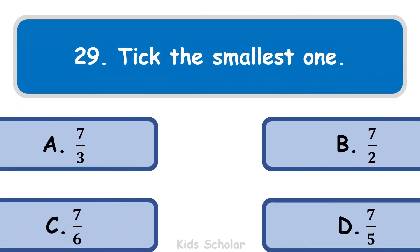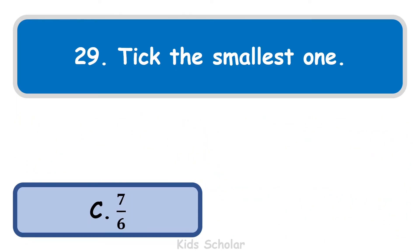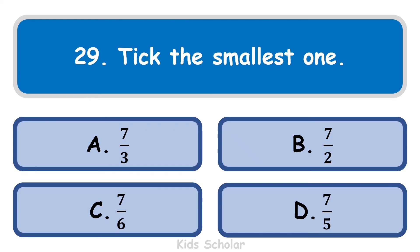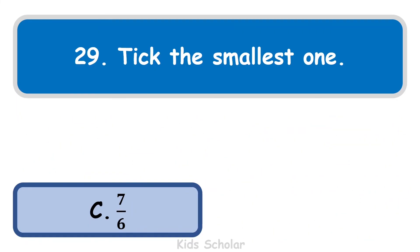Next question is: tick the smallest fraction. The options are 7 by 3, 7 by 2, 7 by 5, and 7 by 6. All fractions have the same numerator, so the fraction with the biggest denominator is the smallest. Therefore, 7 by 6 is the smallest fraction.